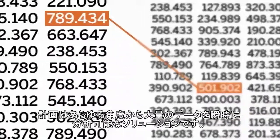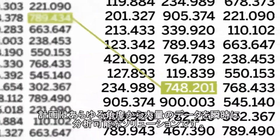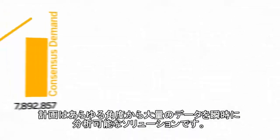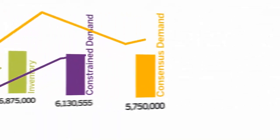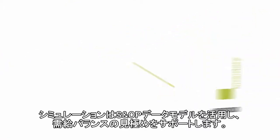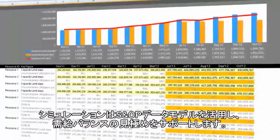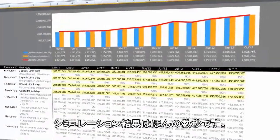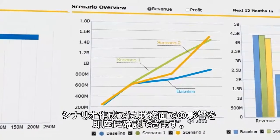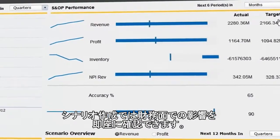Plan using a solution that lets you analyze massive amounts of this data instantly, at any level of granularity. Run simulations to support demand and supply balancing decisions using your full S&OP data model and see results in seconds, not hours. And create scenarios and see their financial impact instantly.